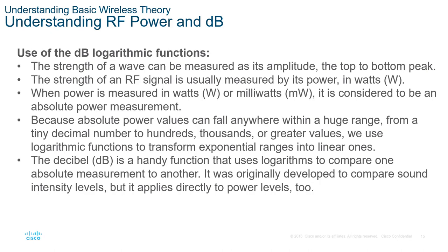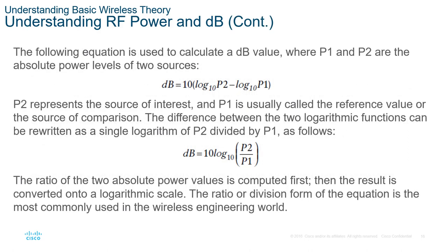Decibels are one of the more confusing sections when looking at power levels. The calculation is: dB = 10 × log₁₀(P2/P1), where P1 and P2 are the absolute power levels of two sources. P2 represents the source of interest and P1 is the reference value. The ratio P2/P1 is computed first, then converted to a log scale. This ratio expression is the most commonly used in wireless engineering.